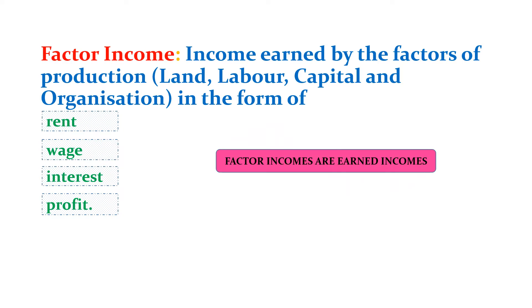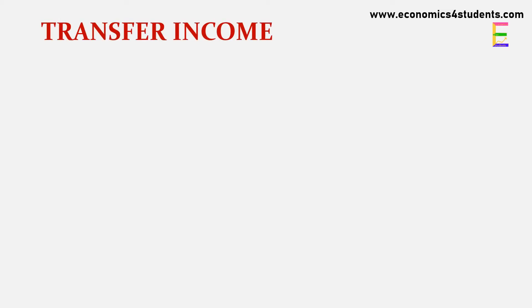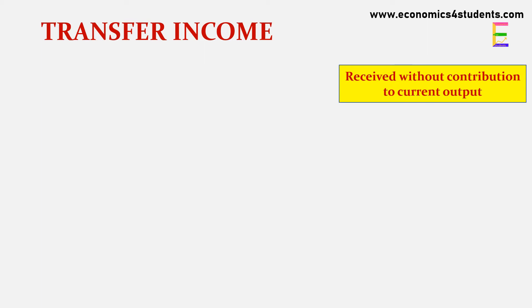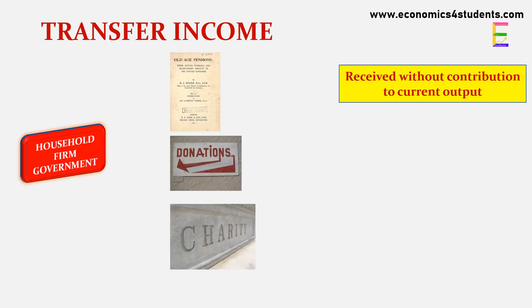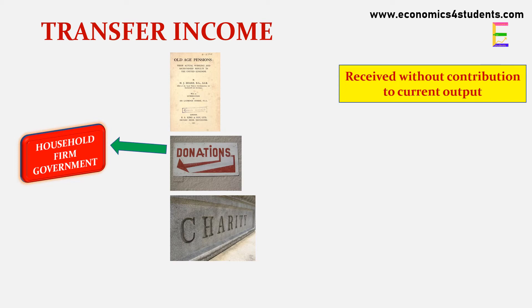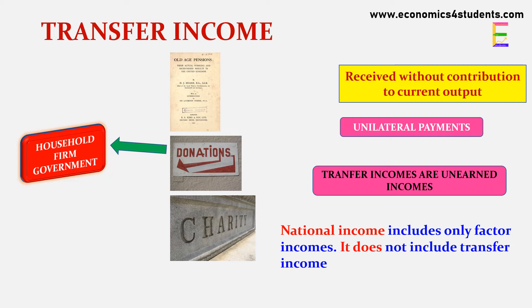One thing we should keep in mind is that factor incomes are different from transfer incomes. Transfer income is the income which is received without any contribution to current output. Transfer income is received by households, firms and government in the form of old age pension, donation, charity etc., without rendering any services in return. So transfer income is a unilateral or one-sided income — that is why it is called unearned income. The important point is national income includes only factor incomes; it doesn't include transfer incomes.